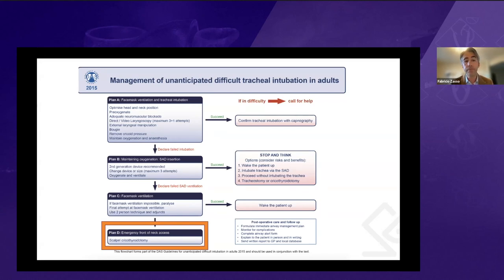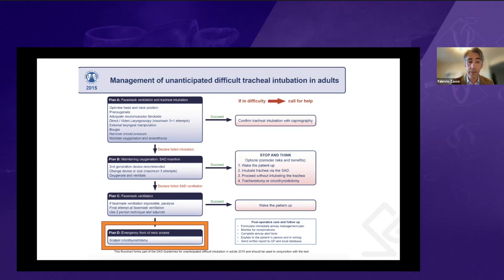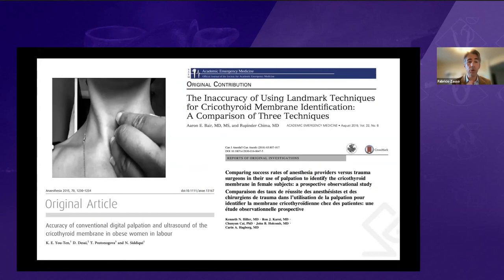This is compared with earlier guidelines such as the ASA American Society of Anesthesiologists guidelines. Another point these guidelines highlighted is that cricothyroidotomy would be the technique of choice for front-of-neck access. Once this was established, there was more interest in studying cricothyroidotomy and how to find the cricothyroid membrane.